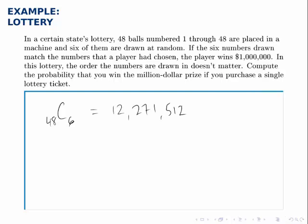That's the number of total possibilities for what could come up when these 6 numbers are drawn. Only one of them is the winning combination though. So the probability of winning is the number of ways to get the winning ticket, there's only one, divided by the total number of possibilities for what ticket you could buy. And that's the 12,271,512.